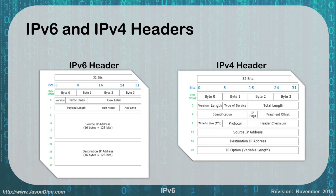If you look at the headers, you can see how simple it is — the one on the left, which is IPv6, versus the one on the right. That's really going to make it a lot quicker and easier to send data. Essentially, what we have is our version, our traffic class, our flow label, our payload, our next header, our hop limit, source and destination, and off the information goes.